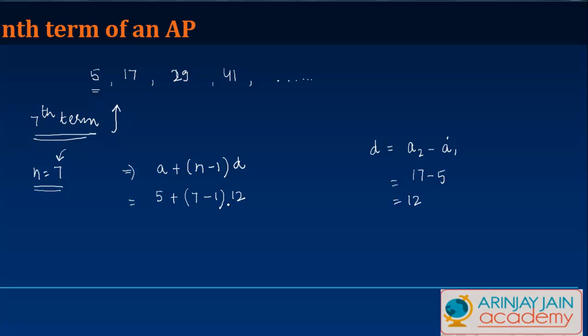So 7 minus 1 is 6 times 12 is 72 plus 5 is 77. Should we try this out?